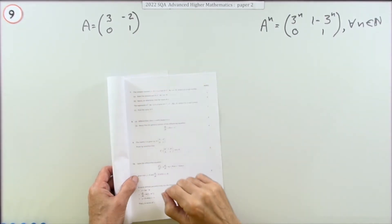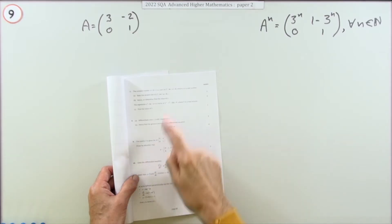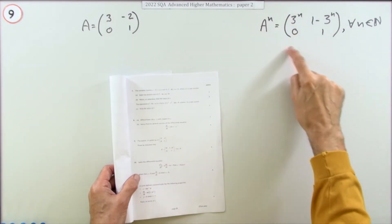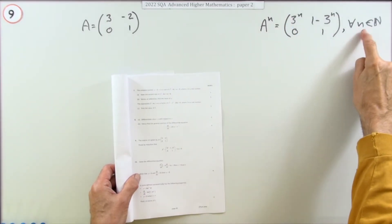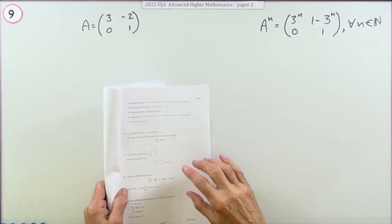So question nine from the 2022 Advanced Higher paper: proof by induction. You're given this matrix A and you have to prove by induction that A to the power n has this form for all natural numbers.